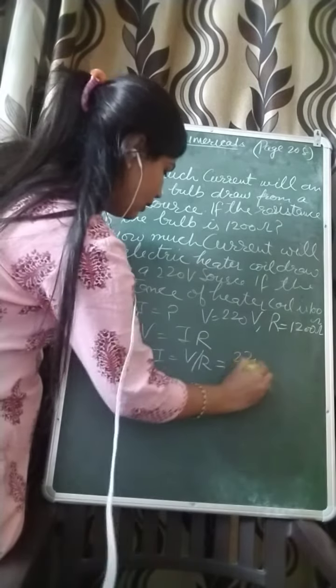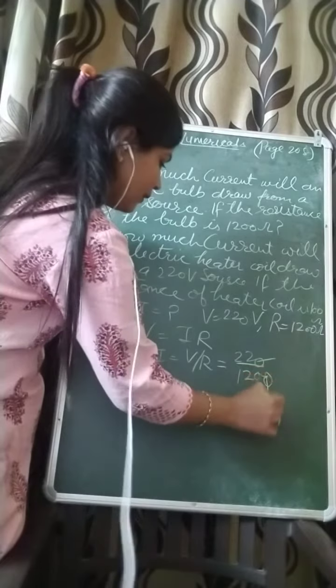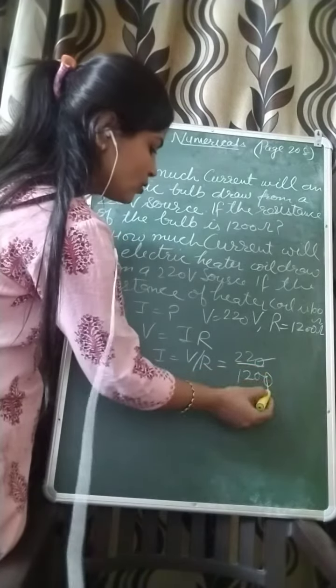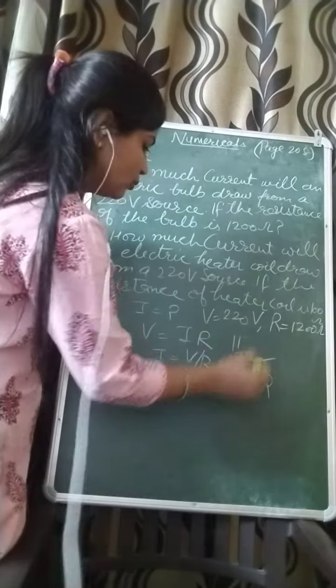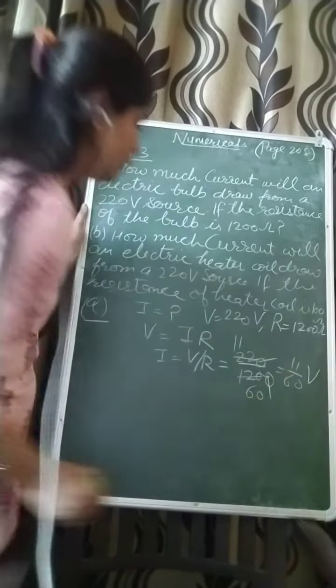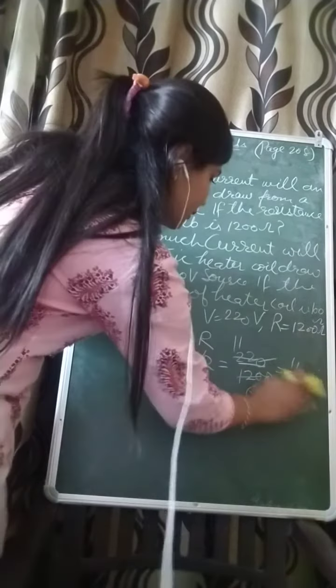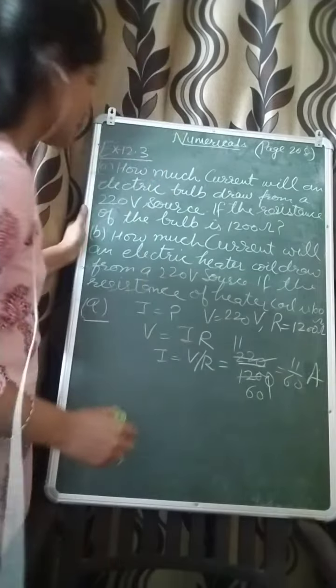Now V is given 220, R is given 1200, so you will cancel this. 0 is 0 cancel, 2 into 2, that is 11 upon 60 ampere. This is the current in the circuit.